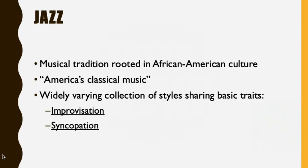Chapter 51 introduced swing music, which is a kind of subgenre of jazz that was made popular in the 30s and 40s, particularly by Duke Ellington. Today we're moving a few years into the future past that to look at a style of jazz that was kind of born in opposition to swing music and how popular it was.